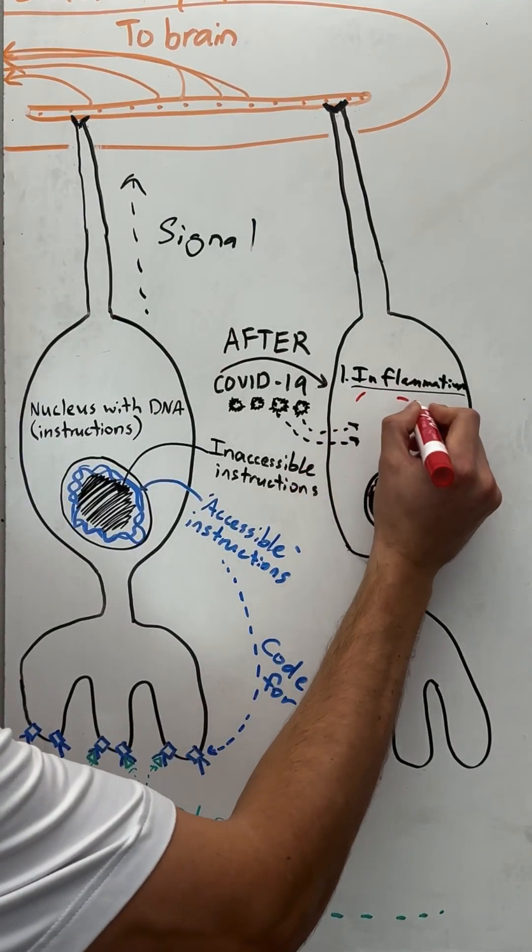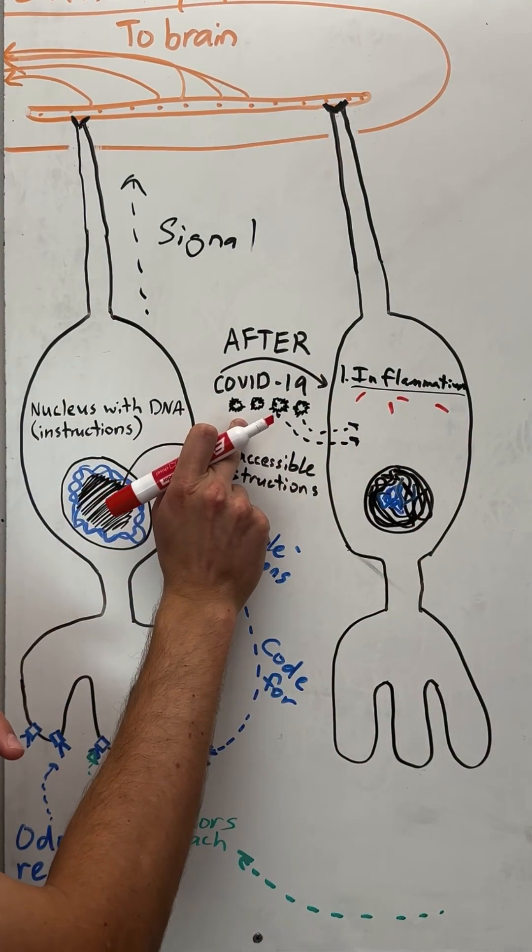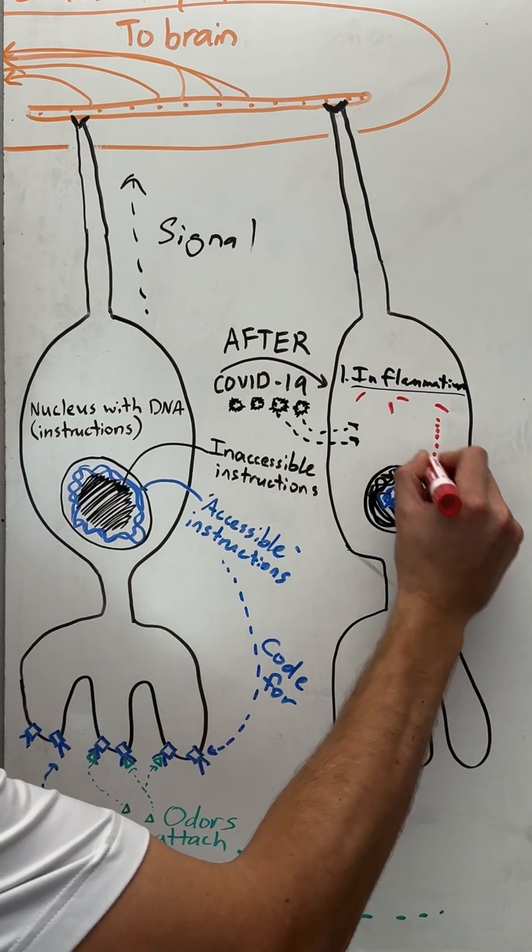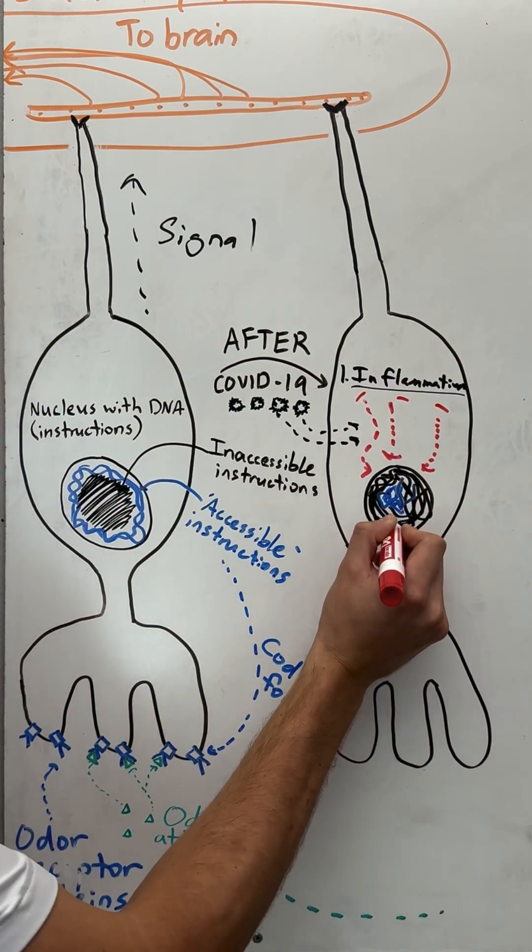Well, inflammation is caused by chemicals. And the chemicals released during COVID-19 infection actually go to the nucleus and rearrange the architecture of the DNA.